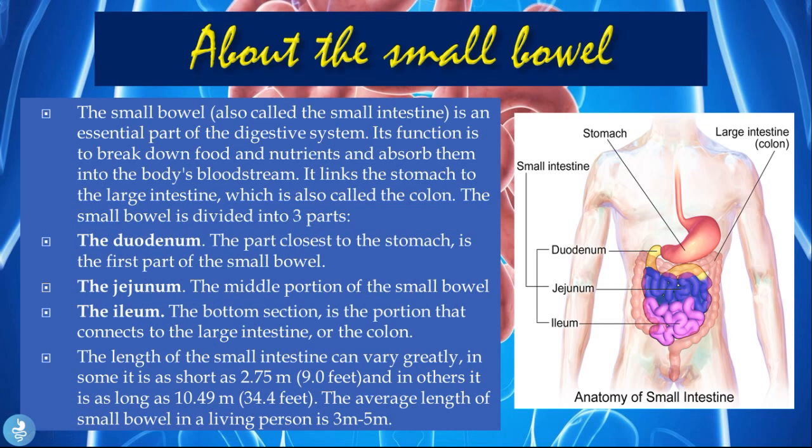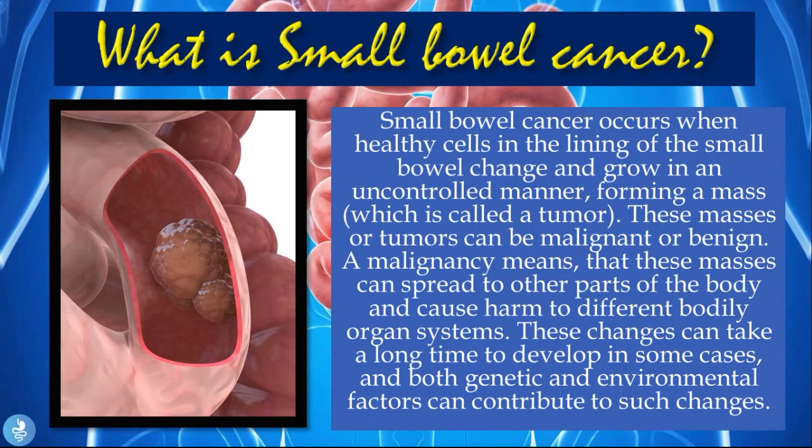The length of the small intestine can vary greatly. In some people it is as short as 2.75 meters (about 9 feet), and in others it is as long as 10.49 meters (about 34.4 feet). The average length of the small bowel in a living person is about 3 to 5 meters.